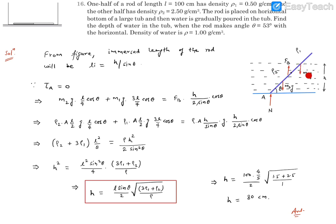Similarly the torque of m₁g is going to use this length which is going to be basically total length minus L by 4, that is 3L by 4 and cos θ. This must be equal to the torque of the buoyancy force into the distance. The perpendicular distance is going to be half of the immersed portion, that means h by 2 sin θ into cos θ, because we need to take this perpendicular component.